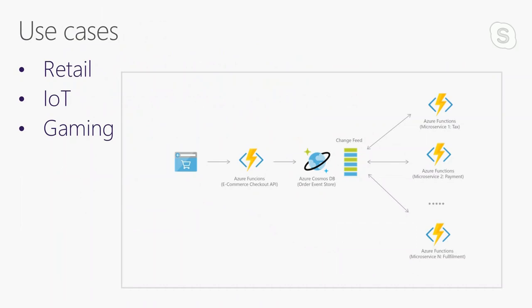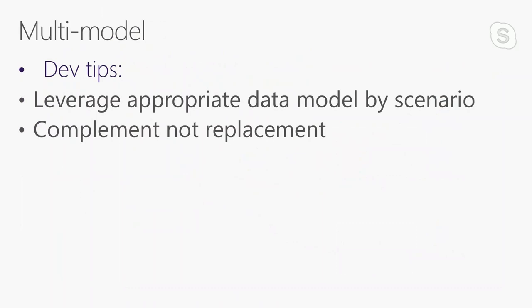This screen is a great example of a use case for Cosmos DB because it uses the change feed, which we'll be talking about later. It leverages microservices with the change feed to handle different functions in the retail industry. You can really power up your applications using Cosmos DB. My developer tip for this section: leverage the appropriate data model based on the scenario. If you want super-relational data, use the Graph API. For tabular data, use the Table API. These models are meant to complement each other, not replace each other.